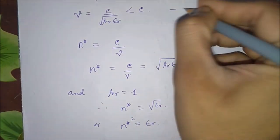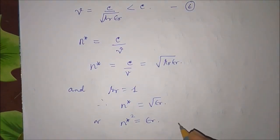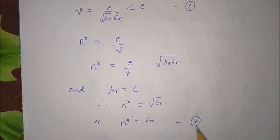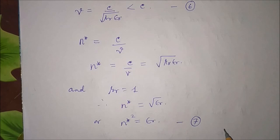Equation v less than c is equation 6, and n² equal to epsilon_r is equation 7, called Maxwell's relation. This has been confirmed by experiments for long waves, i.e., radiofrequency and slow infrared oscillations. In the visible region, it is fairly well satisfied for substances like hydrogen, carbon dioxide, nitrogen, and oxygen, but fails for many other substances showing infrared selective absorption. With water, the failure is especially marked.